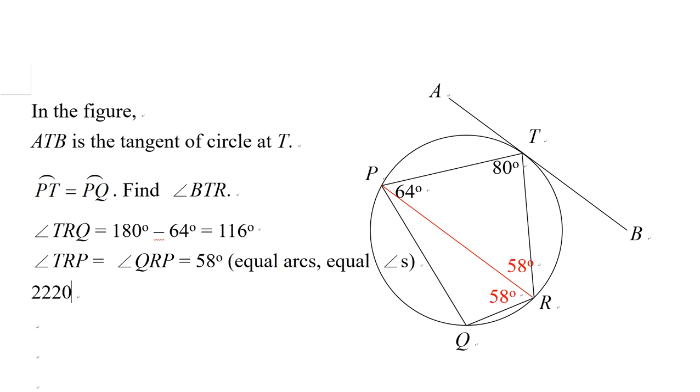And next, you can find angle ATP. If you consider TP as a chord, the angle opposite to the chord TP would be angle TRP. So angle ATP equals angle TRP equals 58 degrees. Angle in alternate segment.